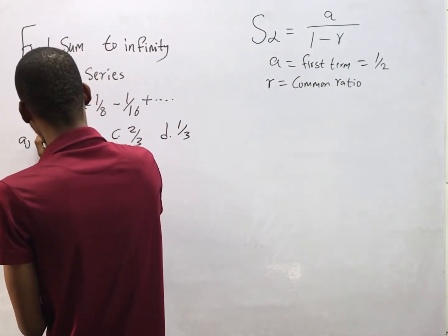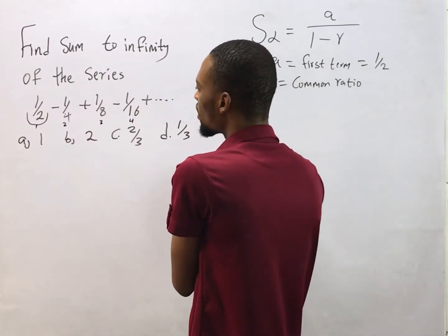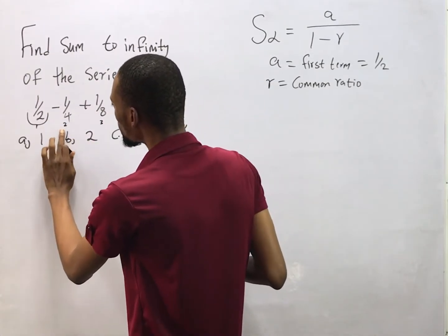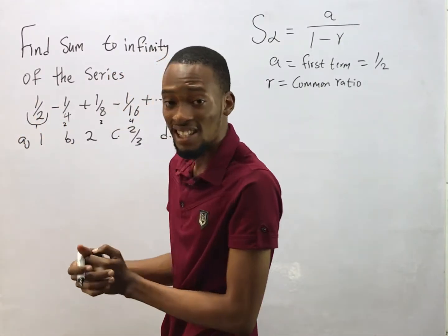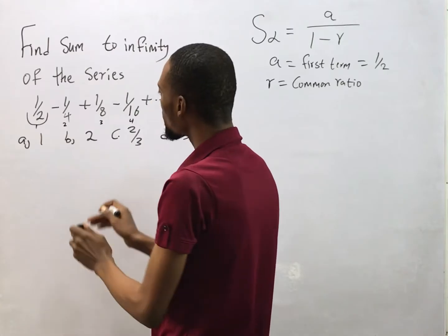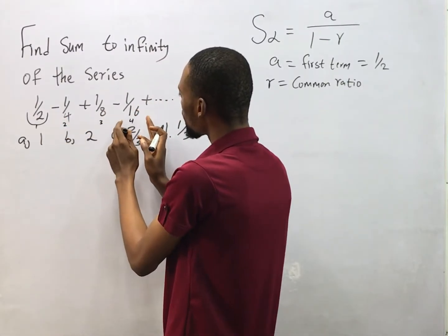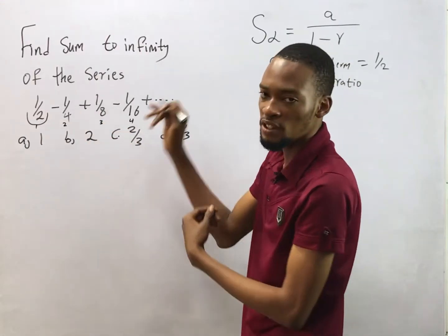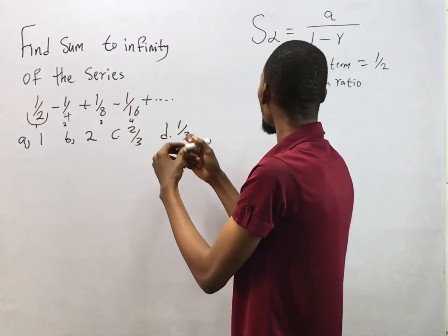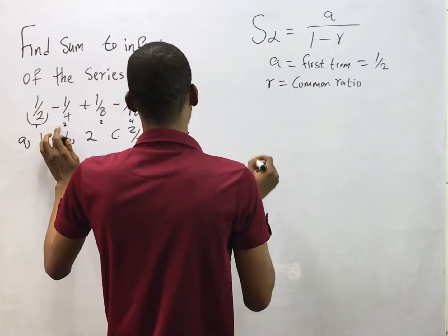For example, this is first term, second term, third term, fourth term and so on. Now if we divide the second term by the first term we'll get the same answer if we also divide the third term by the second term or we divide the fourth term by the third term. So any number you take and divide by the previous number, you should get the same answer. That is what common ratio is about.